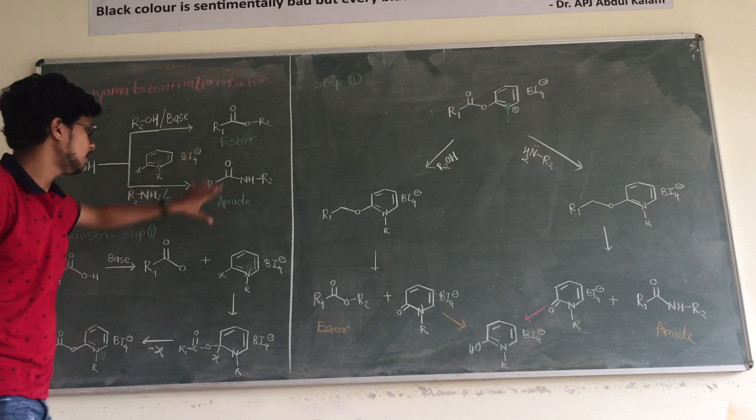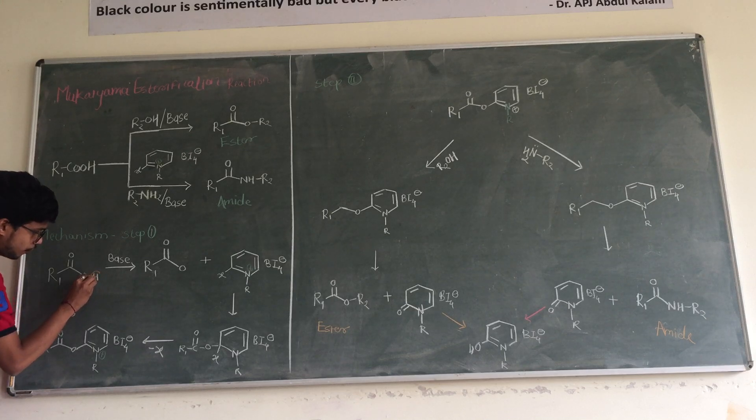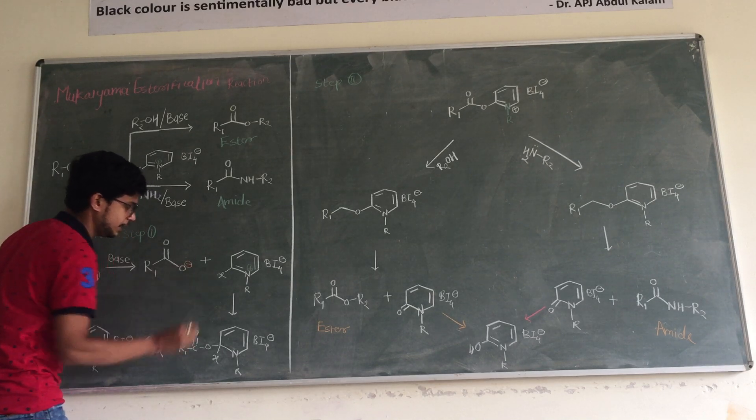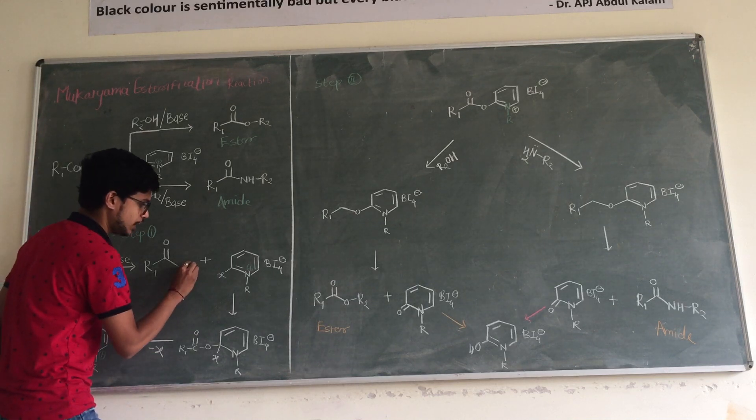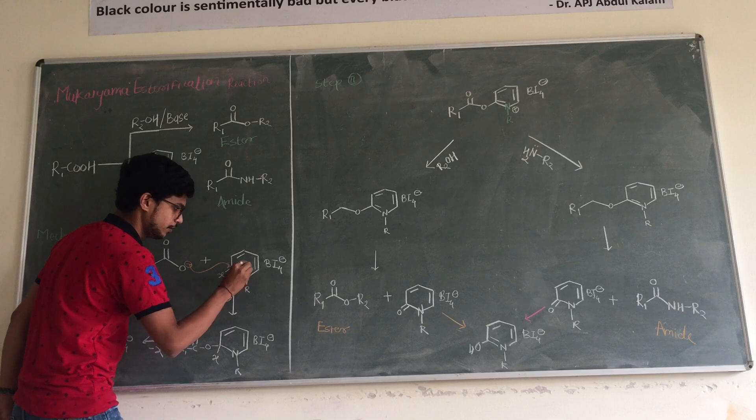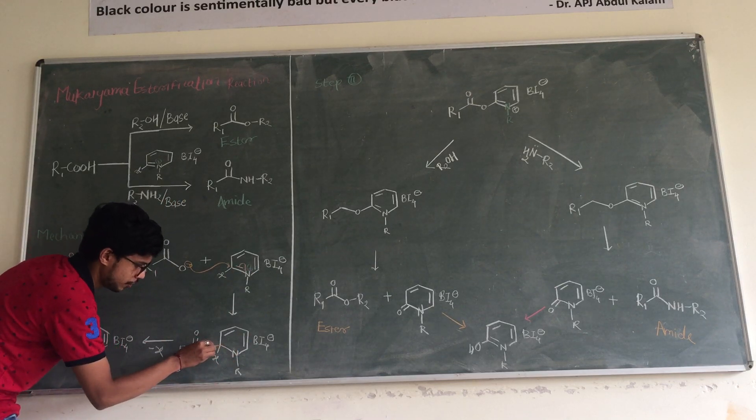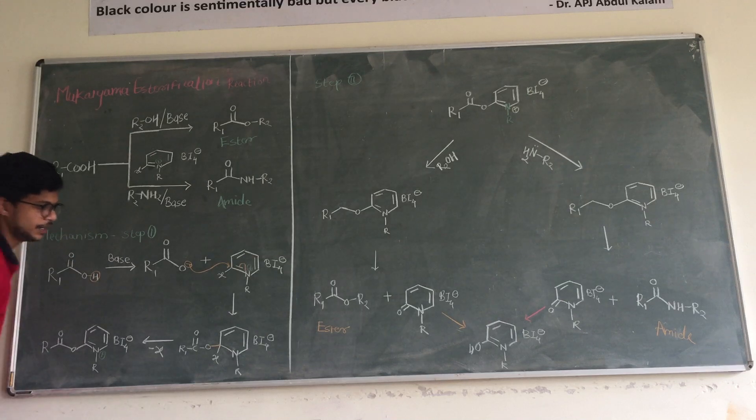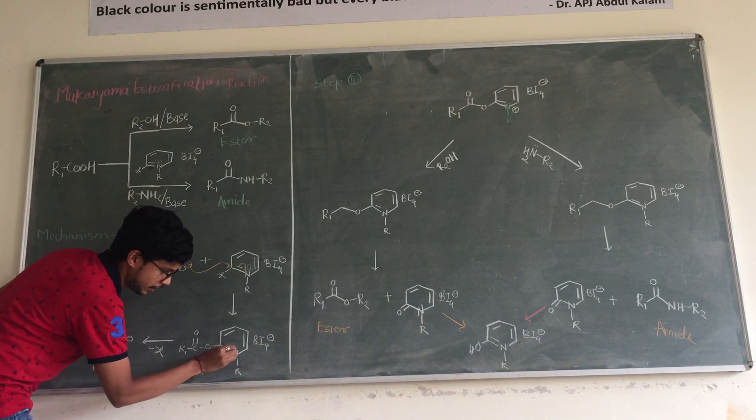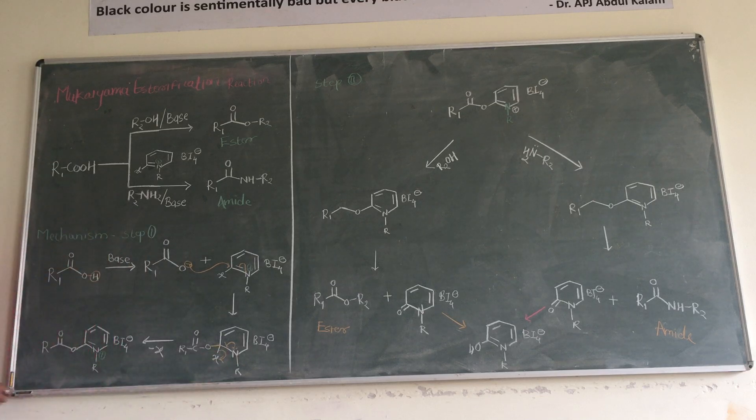Mechanism: base will abstract hydrogen from here. We get a negative charge. The negative charge attacks on this bond, shifting will be here. The formation of this new bond attacks N, the nitrogen lone pair shifted here, and removal of hydrogen group.